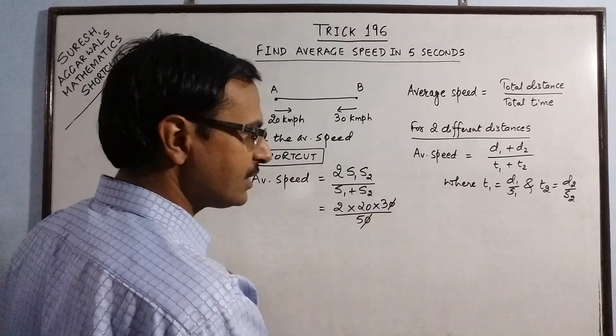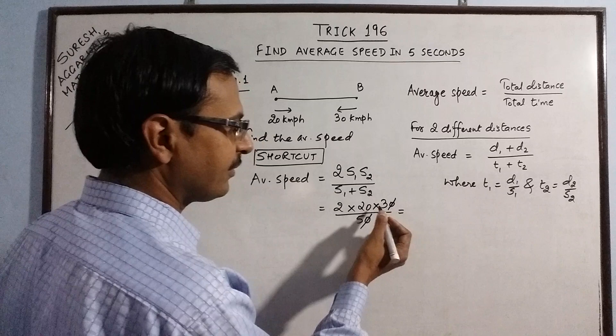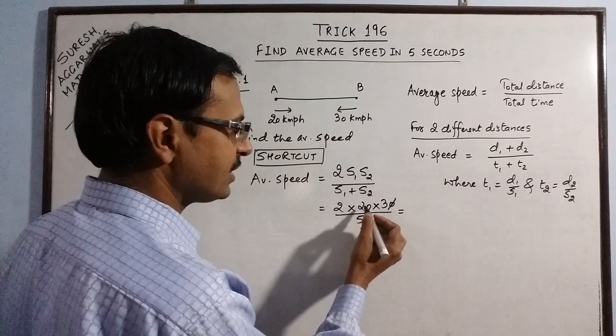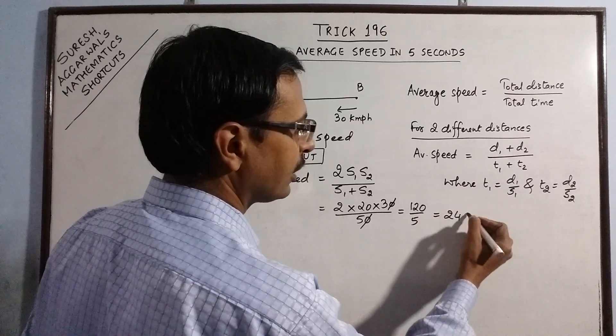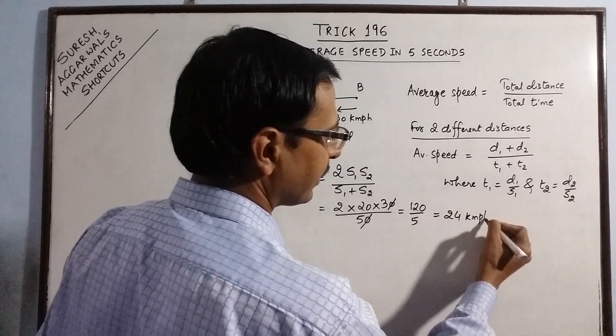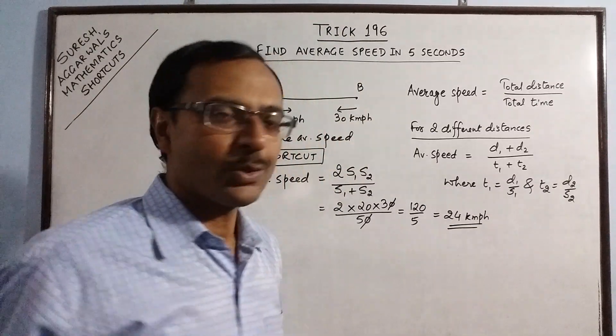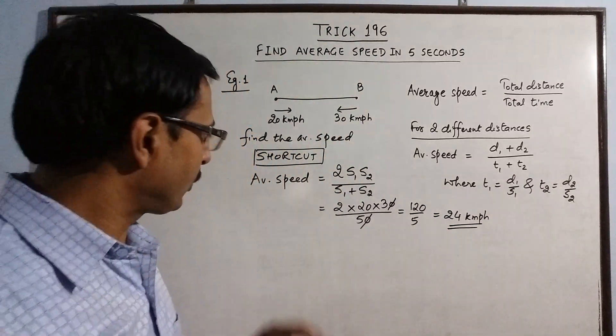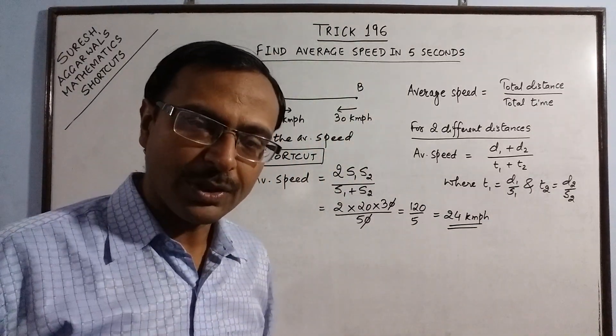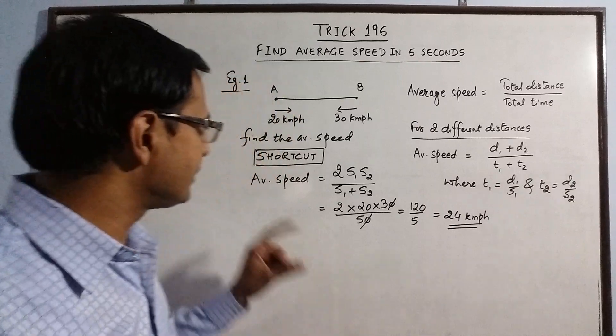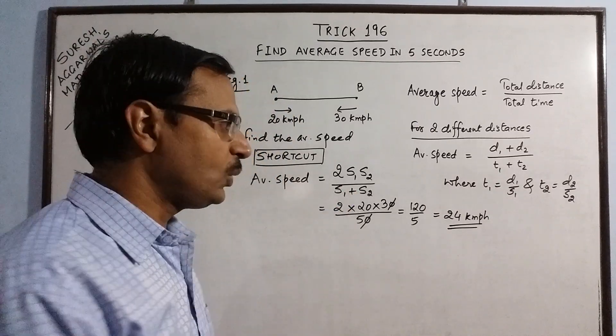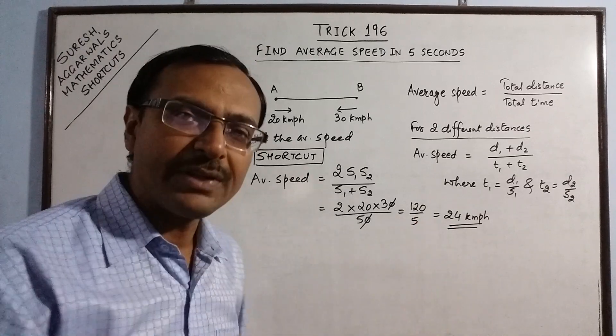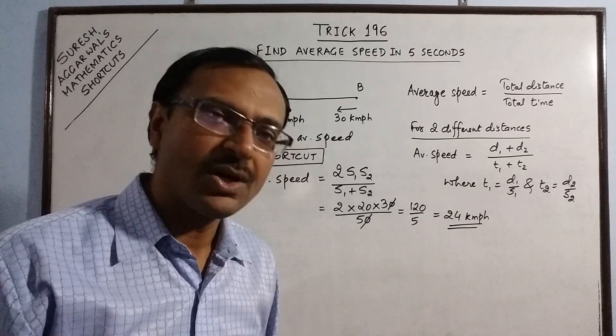So, 10 gets cancelled. You have 2 into 6 into 20, 10 gets cancelled. So, you have 120 upon 5, 150 upon 5. So, your answer is 24 km per hour. So, you see we have not found out the time. We have not used any lengthy formulas. Just a small shortcut for finding the average speed and you get to the answer within 4 to 5 seconds only.